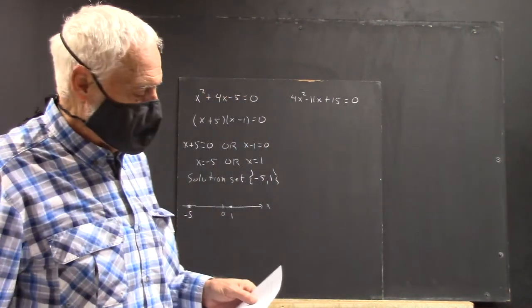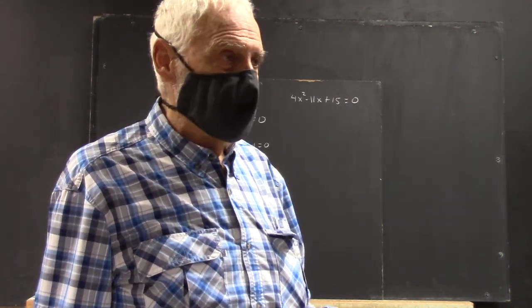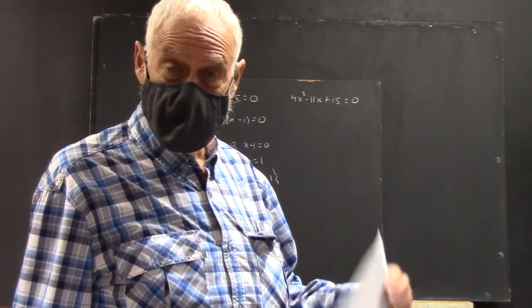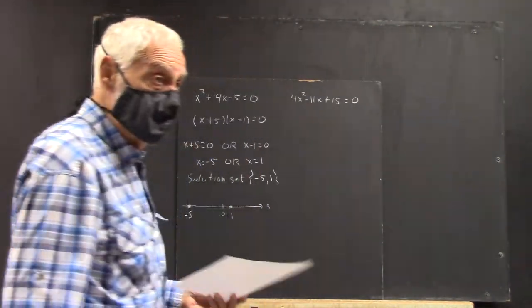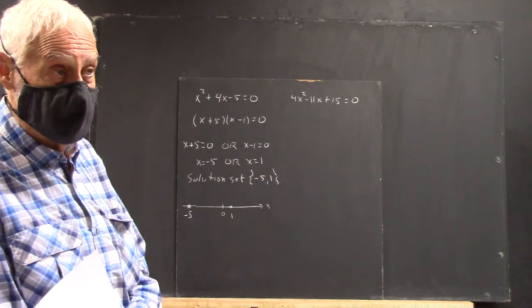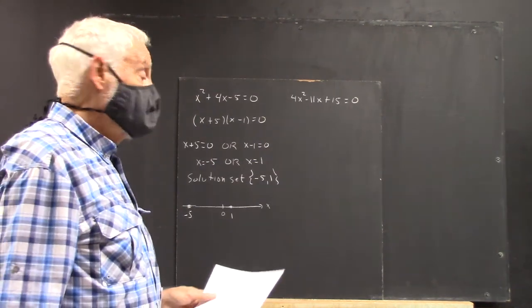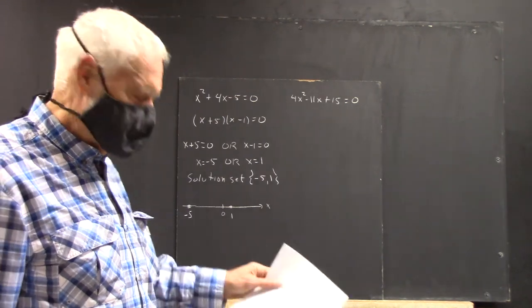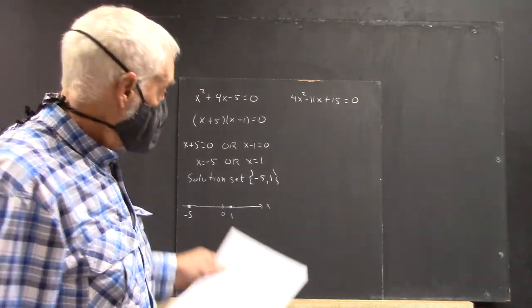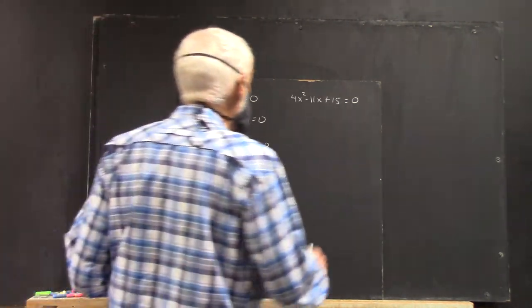Okay. Now, I forgot to put the words, if possible, on the instructions. I said solve by factoring. I meant to say solve by factoring, if possible. Because this one is impossible. At least not with integers. As a matter of fact, not even with real numbers. It does factor over complex numbers, as any polynomial does. But we're not going to worry too much about that. Except I will show you.